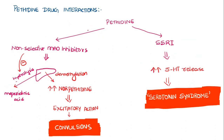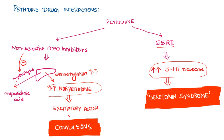The two important drug interactions of pethidine are: first, when patients on pethidine are given a non-selective MAO inhibitor, hydrolysis is inhibited — no meperidinic acid is formed, more demethylation occurs producing more norpethidine, leading to increased excitatory reaction and increased risk of convulsions. Second, when pethidine is given to a patient on SSRIs, it increases serotonin release, increasing the chance of serotonin syndrome.